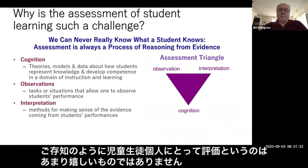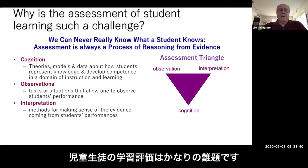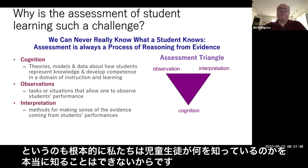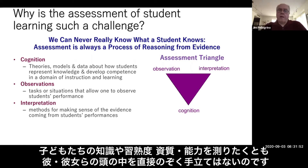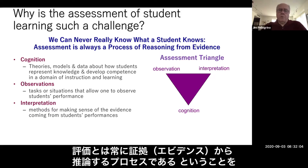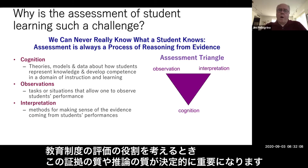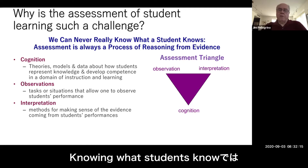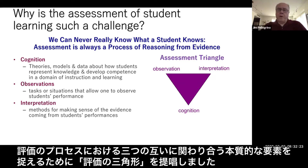Assessment of student learning is a real challenge because of a fundamental issue: we can never truly know what a student knows. We do not have a way to actually look inside a student's head and directly measure the nature of their knowledge, proficiency, and competency. So we have to understand that assessment is always a process of reasoning from evidence, and it is the quality of that evidence and the quality of that reasoning that is very important. In the Knowing What Students Know report, we referred to the assessment triangle as a way to capture the three interacting and essential elements of the assessment process.